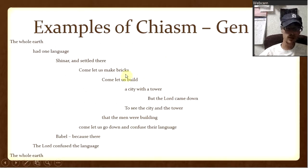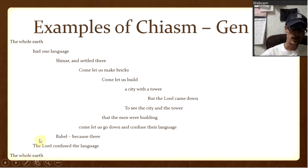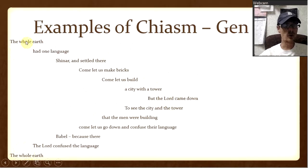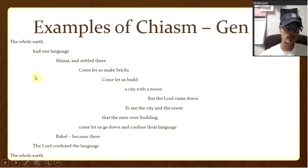The first example is from Genesis 11, verses 1 through about 12. If you notice, it both starts and ends on the same point: 'the whole earth' and 'the whole earth.' The middle point is 'but the Lord came down.' So: the whole earth had one language, Shinar settled there, come let us make bricks, come let us build a city with a tower, but the Lord came. Then it goes right back — to see the city and the tower, come let us go down and confuse their language, Babel because there, Shinar settled there, the Lord confused the language, had one language, the whole earth, the whole earth.